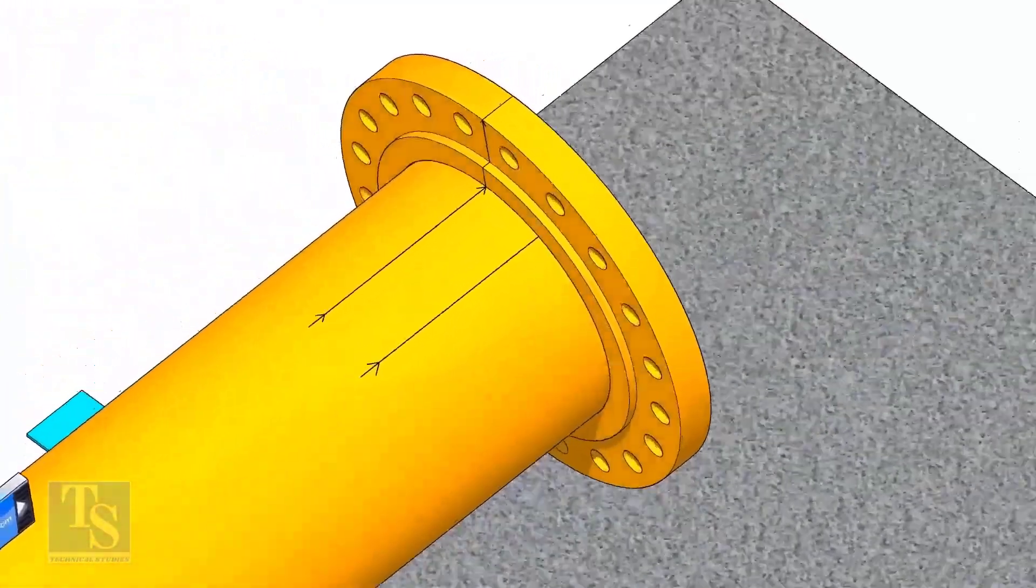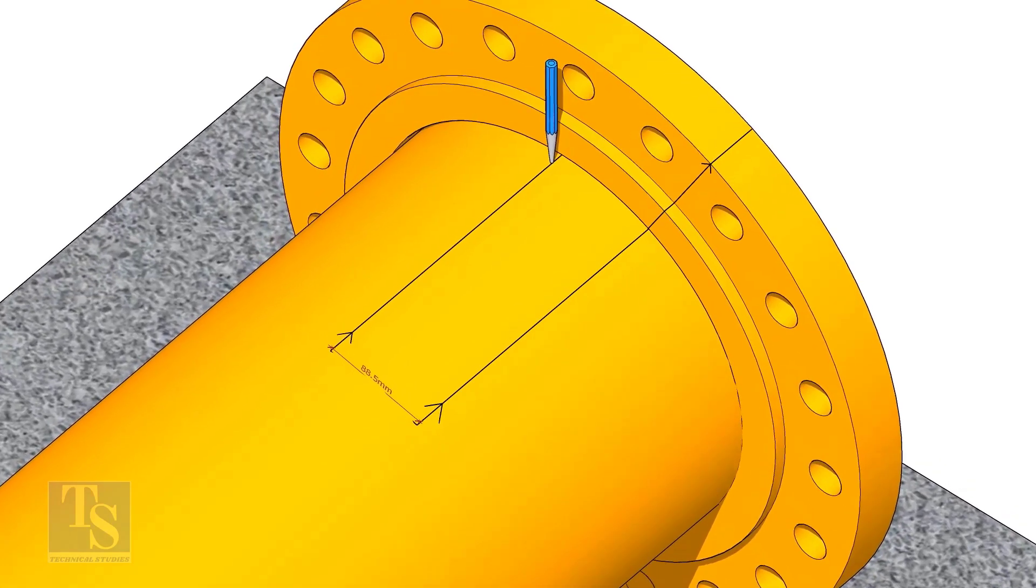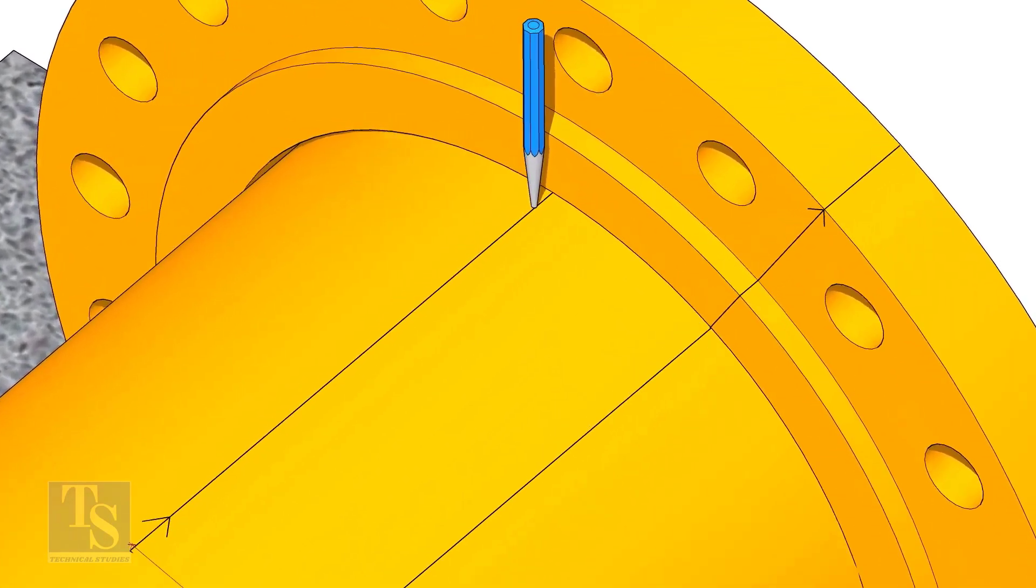Put the flange on the pipe. Rotate the flange until the center line on the flange and the 25 degree line on the pipe comes in a line. Don't forget to punch mark the center lines.